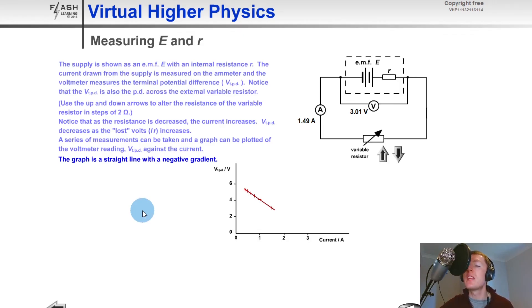And that is always going to be the case when you're carrying out an experiment to measure the terminal potential difference against current for emf. So you're always going to see a graph that looks like this when you're dealing with emf type questions.